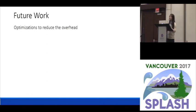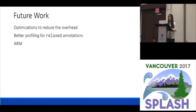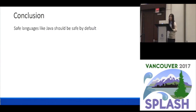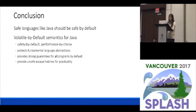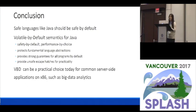Let's quickly talk about future work. There are a few things we can do: we can try to optimize the implementation to get smaller overhead, or we can do better profiling to find better candidates for relaxed annotations. The natural question is: what about ARM? We would like to test it on Android applications. We have some preliminary results, which are actually quite surprising — for big data analytics benchmarks, the overhead of scheduling throughput is much higher, but generally the overall overhead is just 14%. In conclusion, we believe safe languages like Java should be safe by default. Therefore, we propose volatile-by-default semantics for Java, which gives you safe by default and performance by choice. We believe this can be a practical choice for today's common server-side applications based on our experimental results.